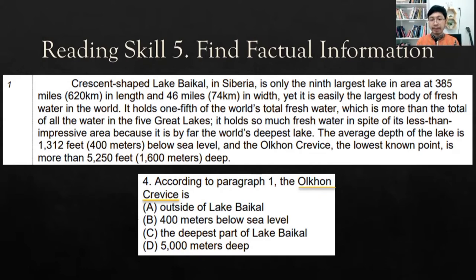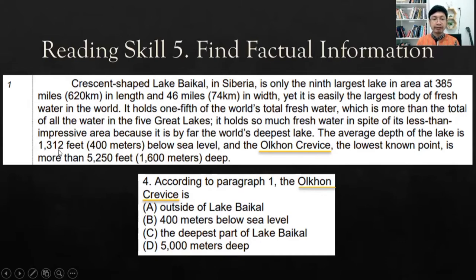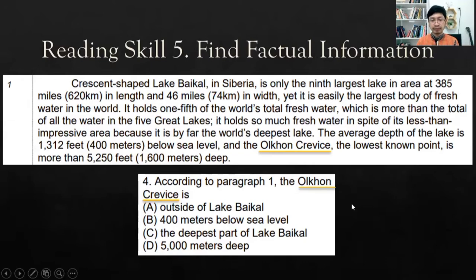We're going to skim the passage and try to locate the keyword. Ocon crevice can be found in a specific line in the passage. Then we read the sentence containing it: 'The average depth of the lake is 1,312 feet or 400 meters below sea level, and the Ocon crevice, the lowest known point, is more than 5,250 feet or 1,600 meters deep.' You can pause the video and try to choose A, B, C, or D.